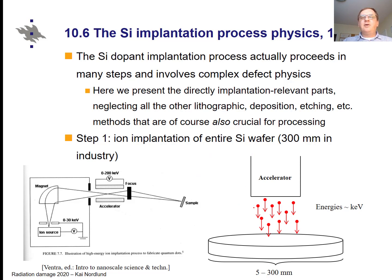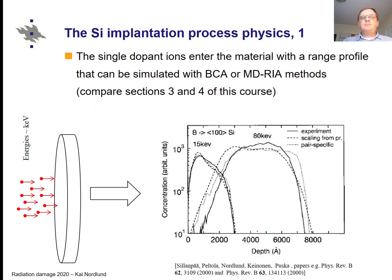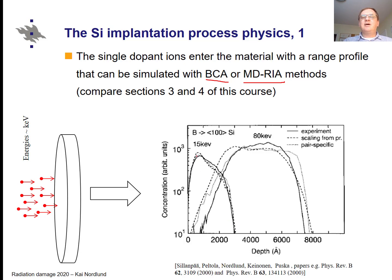In principle, you want to get the dopant atoms into a desired depth of the material, so you do an implantation. By this stage of the course you should be well familiar with this, because earlier we discussed how energetic particles interact and go into materials. For ions we have described both the binary collision approximation (BCA) and the molecular dynamics recoil interaction approximation (MDREA) methods, which can predict quite reliably how deep the ions go. This is something the industry uses when designing the doping process, where a key factor is how deep your dopants go — which relates to the size of the semiconductor circuit.